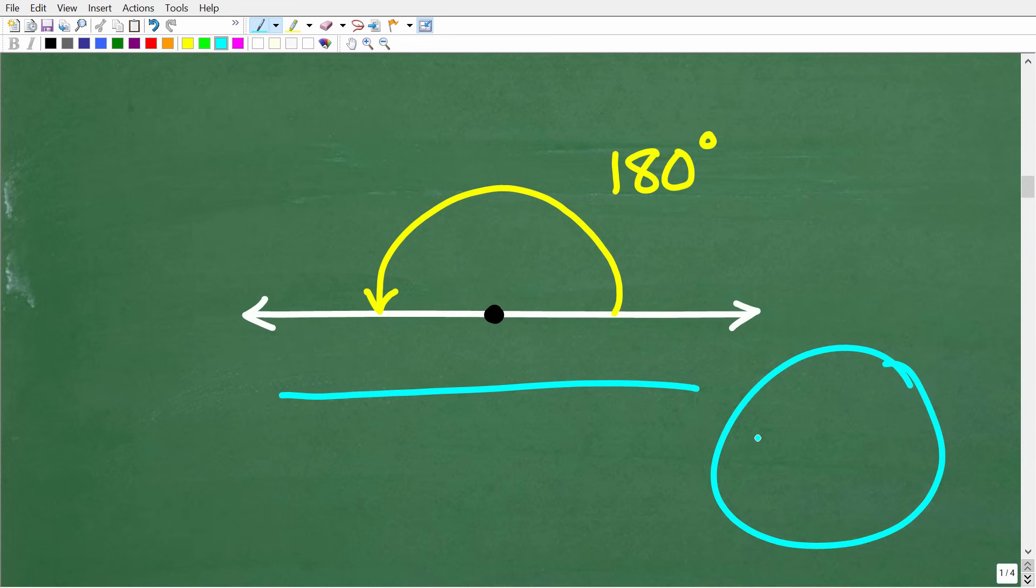So if you think about a circle, for example, and here is the center of this circle, if we kind of go around this circle this way, this is 90 degrees. And then if we go another 90 degrees, we have what? Well, we have 180 degrees, but this is a semicircle, right? So we're going from here to here. But if you notice the shape, that is a line.